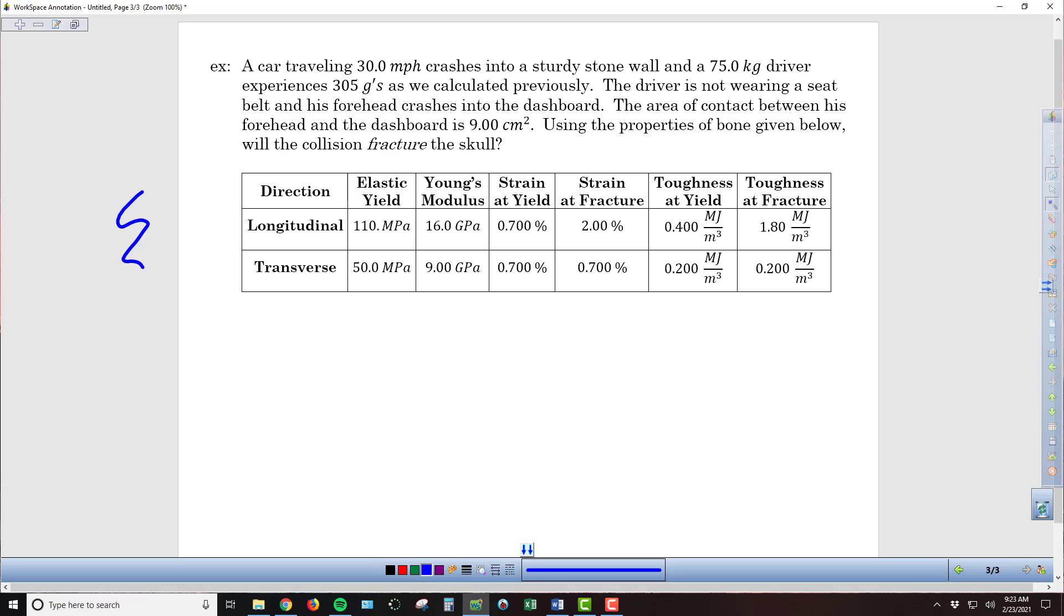In front of us here we see a table that has the material properties of bone in both the longitudinal and in the transverse direction. We can see that the elastic yield, Young's modulus, the strain at fracture, the toughness at yield and at fracture are all significantly lower in the transverse direction than in the longitudinal direction. For the long bones this is consistently going to be the case. They're much better in performing in that longitudinal direction.